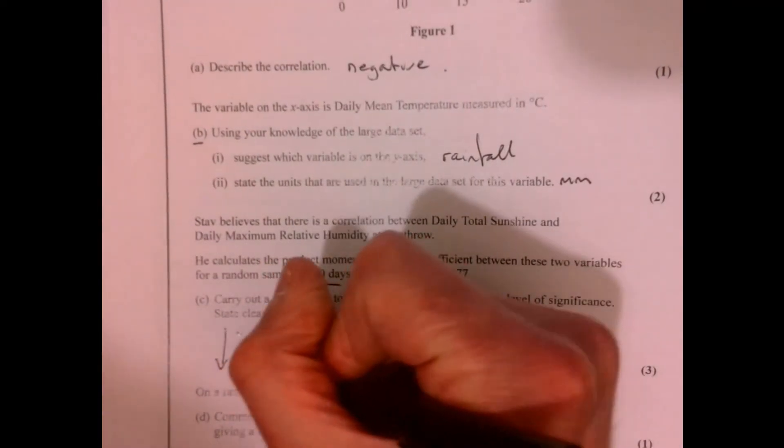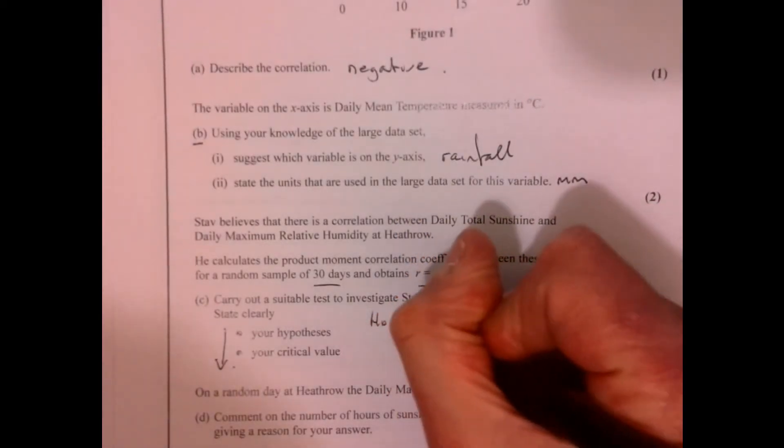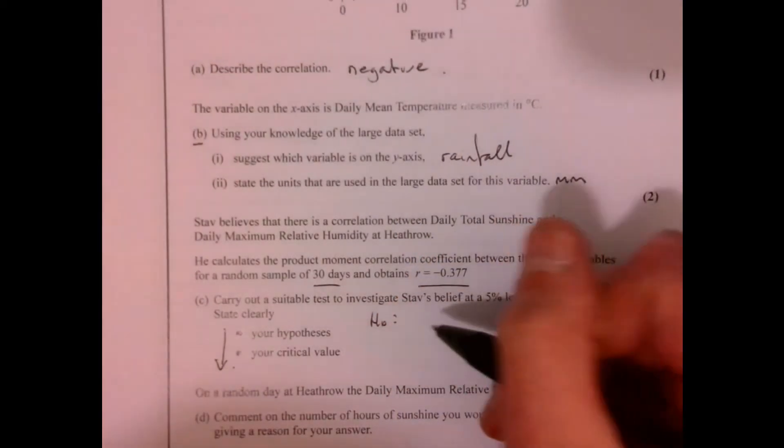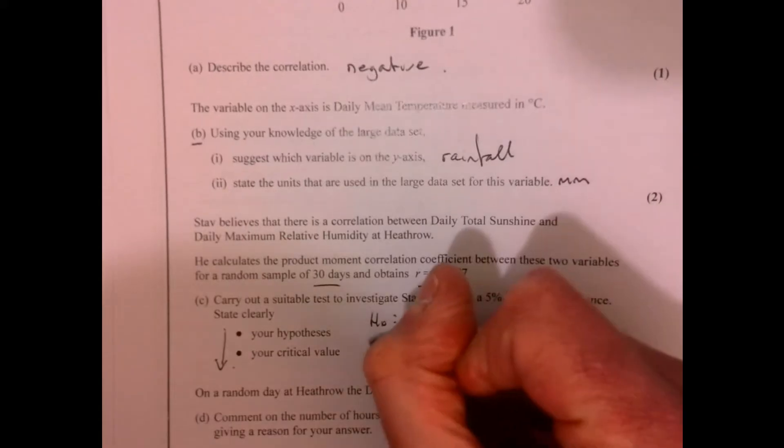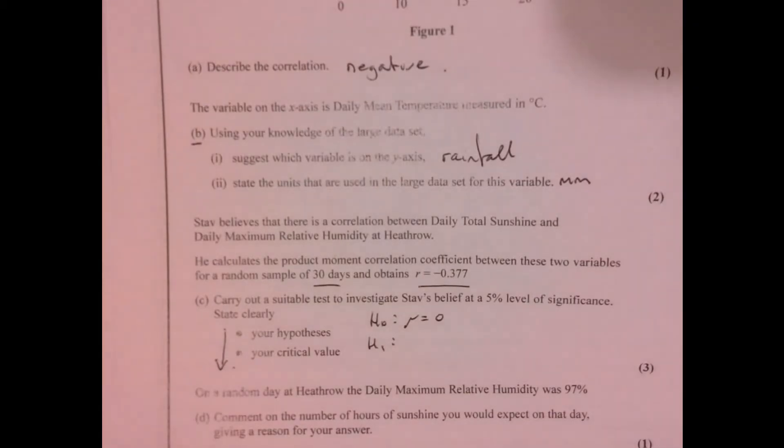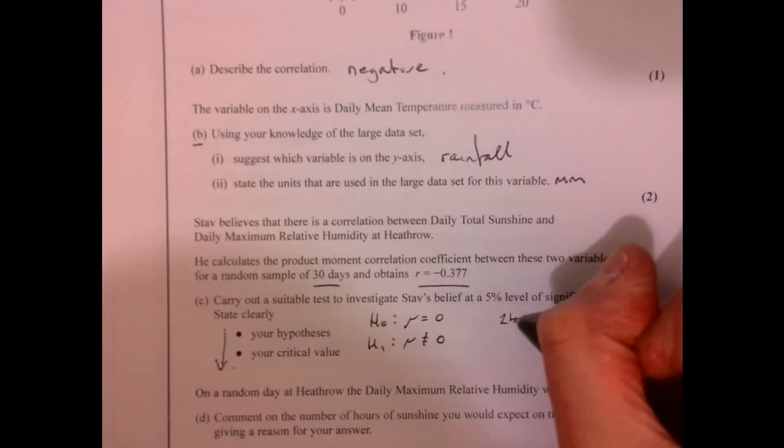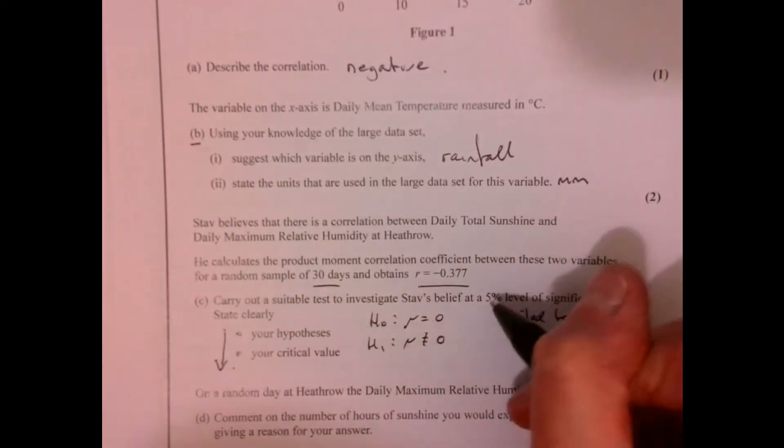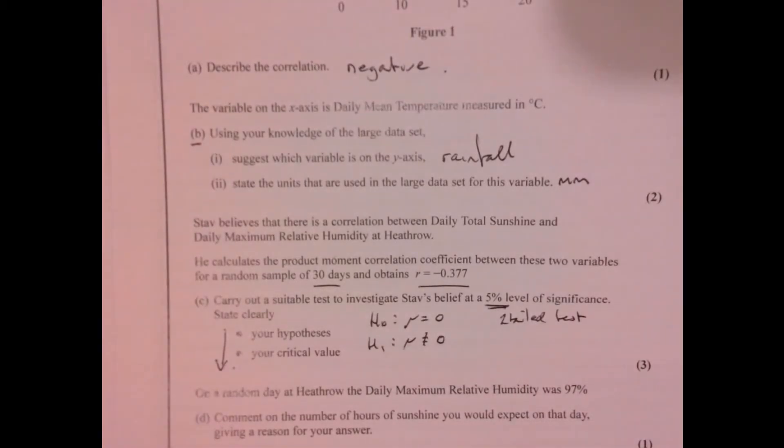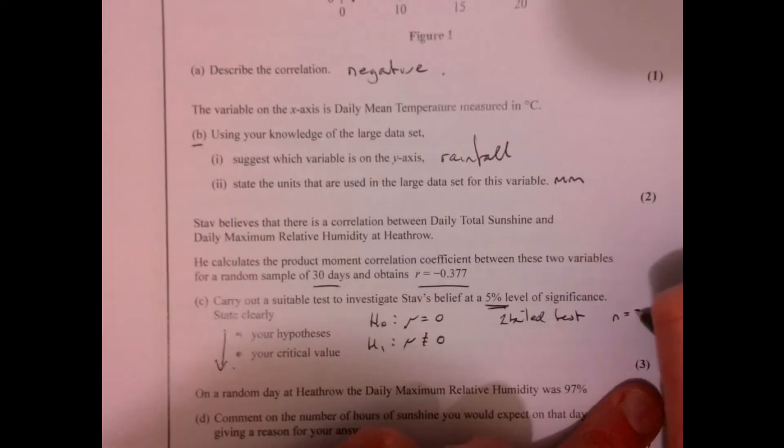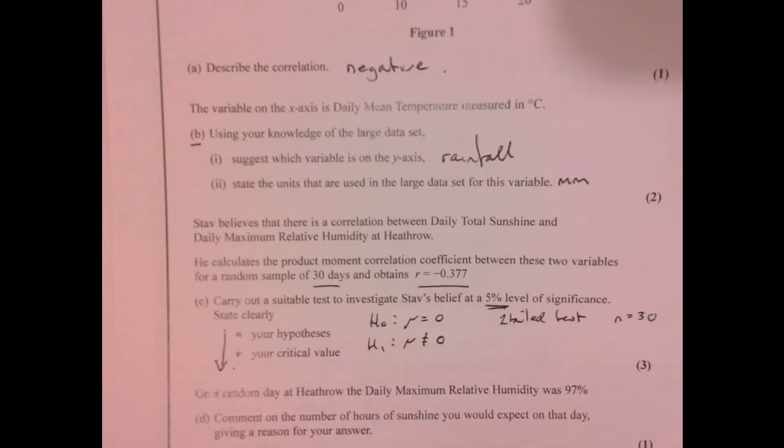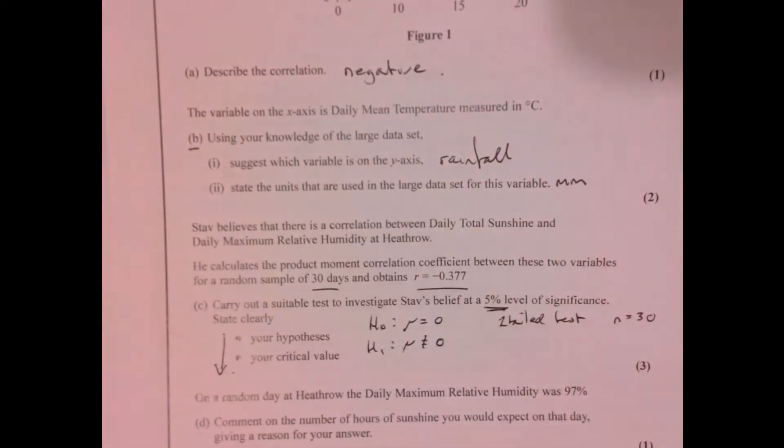This question is quite nice because it gives us guidance to follow. The null hypothesis is when the correlation is zero, so we say ρ = 0. The alternative on this question is that we're just investigating - he doesn't say positive or negative, just that there's a correlation. In other words, ρ ≠ 0. So that makes it a two-tailed test. We're looking at a 5% level, n = 30. It's a good idea to summarize all these bits of information.